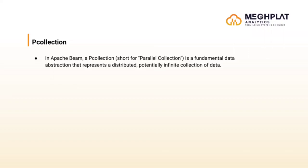With respect to distributed data, a PCollection is designed to handle data that can be distributed across multiple processing nodes or machines in a parallel and scalable manner. Each element of a PCollection can be processed independently in parallel. With respect to immutability, a PCollection is immutable — meaning once it is created, its contents cannot be changed. However, you can apply different types of transformations, known as PTransforms, to create a new PCollection based on the original data.